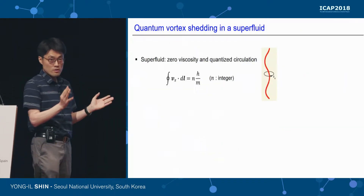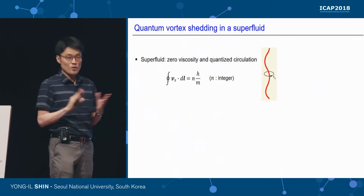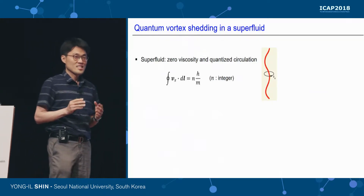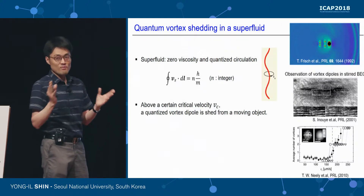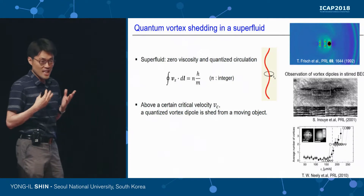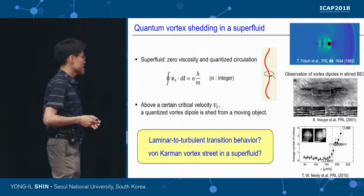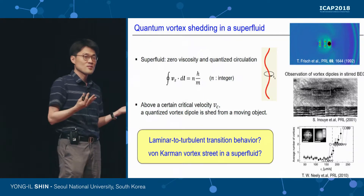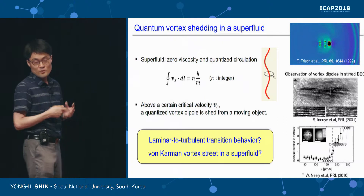After knowing this universal behavior of classical fluid, let's look at the superfluid system. The superfluid is a very peculiar system: there is no friction, we cannot define the Reynolds number at all, and vortices are quantized. It is clear that the superfluid will show totally different flow behavior around a moving object. But we know that above a certain critical velocity, quantized vortices can be shed from the moving object, and it is natural to expect turbulent flow at very high moving velocities. We can ask whether there is a quantum version of the von Kármán vortex street in superfluid.